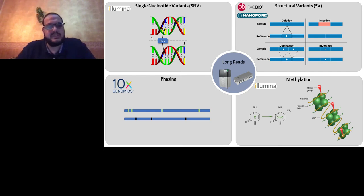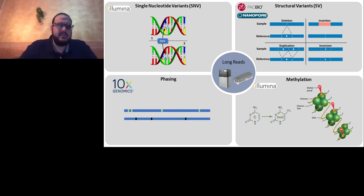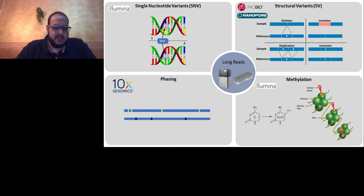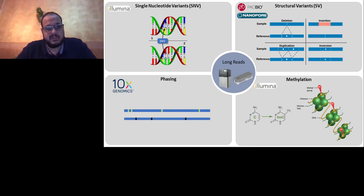Phasing is the study of the co-existence of variants together — for example, which variants occur together in the same haplotype block. The best tool for studying phasing currently is 10x Genomics. Methylation is the addition of a methyl group at carbon number five, which does not change the sequence but can affect expression. Using different library preparations and technologies introduces two kinds of bias and requires larger amounts of DNA for each preparation.